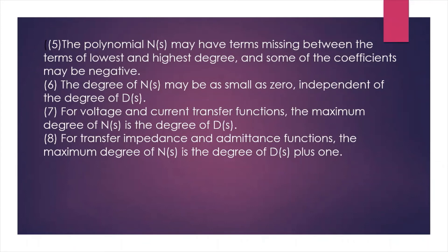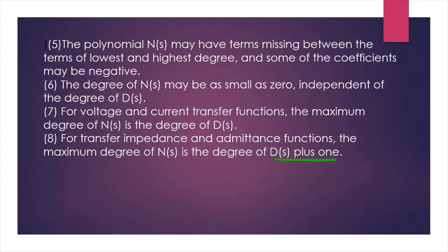For voltage and current transfer functions, the maximum degree of N(s) must be the same as the degree of D(s). Whereas for transfer impedance and admittance, the maximum degree of the numerator can be up to the degree of D(s) plus 1.